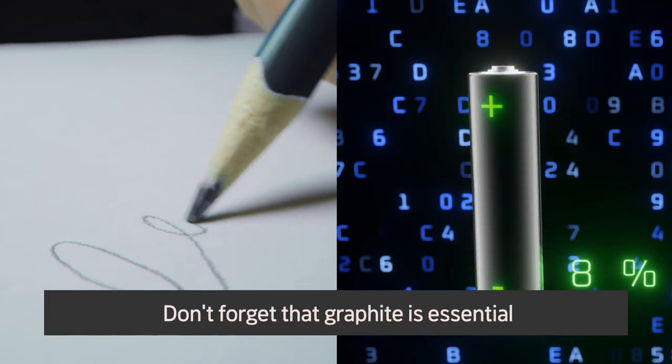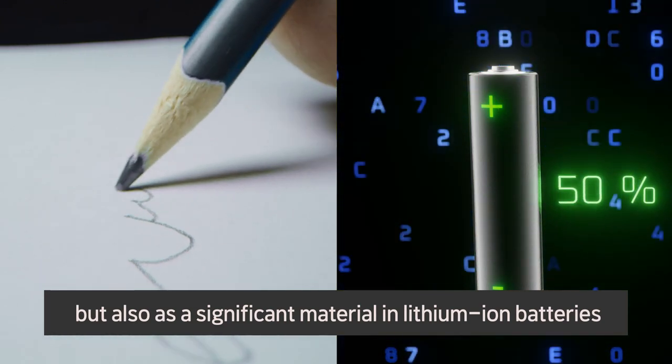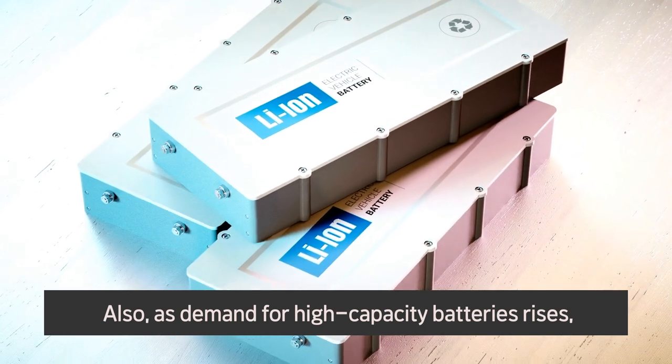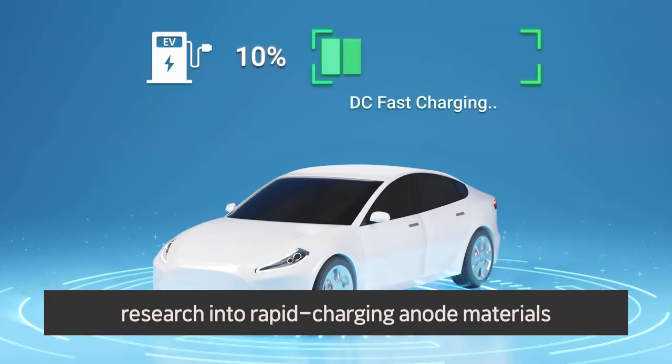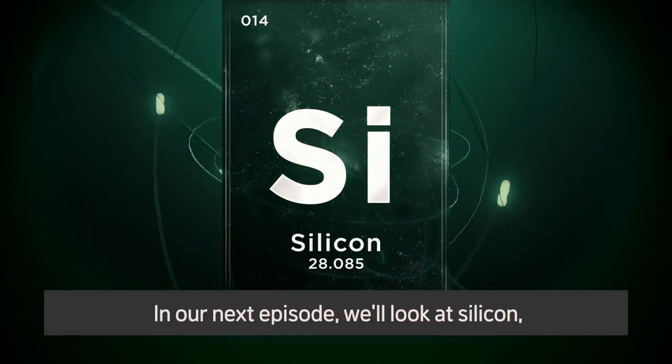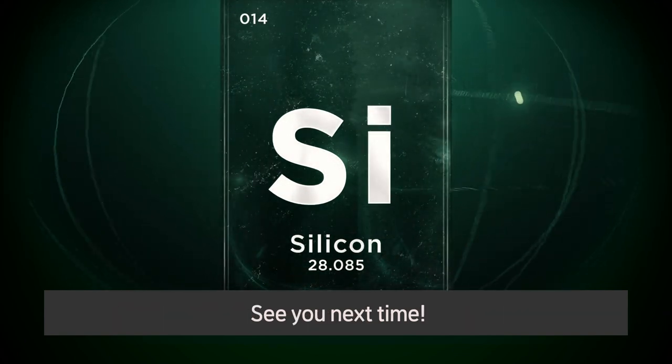Don't forget that graphite is essential not only for pencil lead, but also as a significant material in lithium-ion batteries, which improve our lives. Also, as demand for high-capacity batteries rises, research into rapid charging anode materials is accelerating. In our next episode, we'll look at silicon, the important next generation anode material. See you next time!